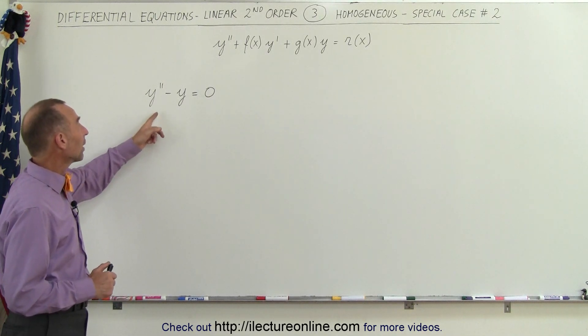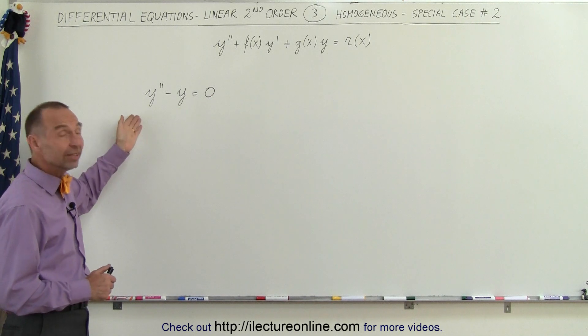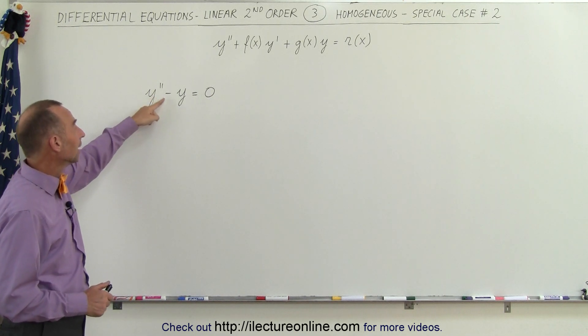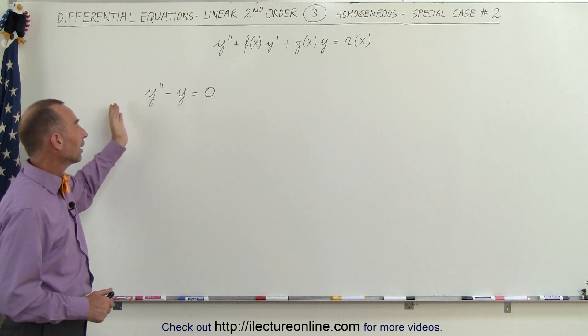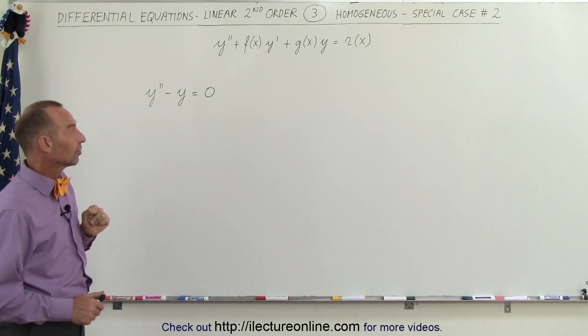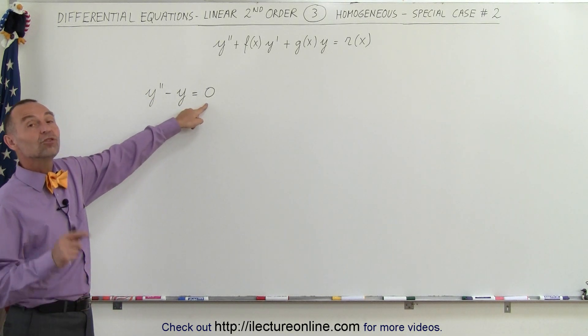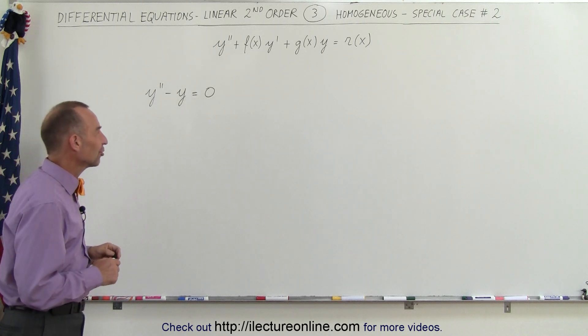Here we have y double prime minus y equals zero. It is indeed linear because it does contain a y double prime, it does contain a y, and nothing but constant functions of x. Also notice that it's a homogeneous linear second order differential equation.